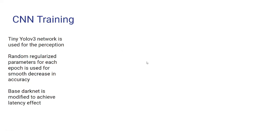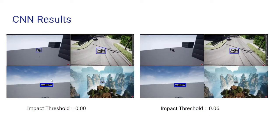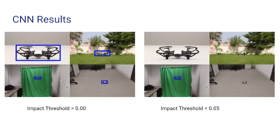This is a result from the real-world data. At impact threshold zero, which uses all the filters, the network is very good at detecting. However, as you start increasing the impact threshold, you can see sudden detection failures. Similar results are observed with real-world data as well.